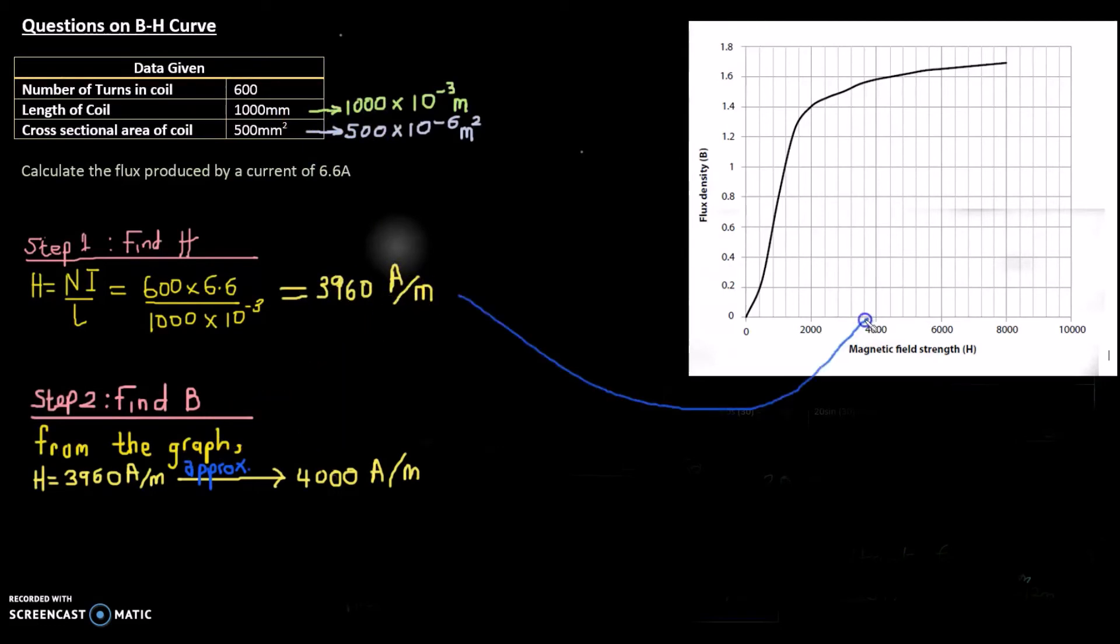3960 will be around about here because reading your graph, that's 2000, 2400, 2800, 3200, 3600, and 3960 will be around about here. You're around there, and that corresponds to about there.